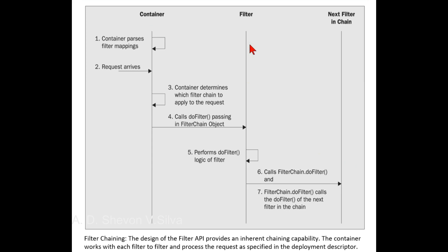This figure is a UML diagram of the interactions. Here is an explanation of what happens. One: the container passes the filter mappings defined in the web.xml file of the application.